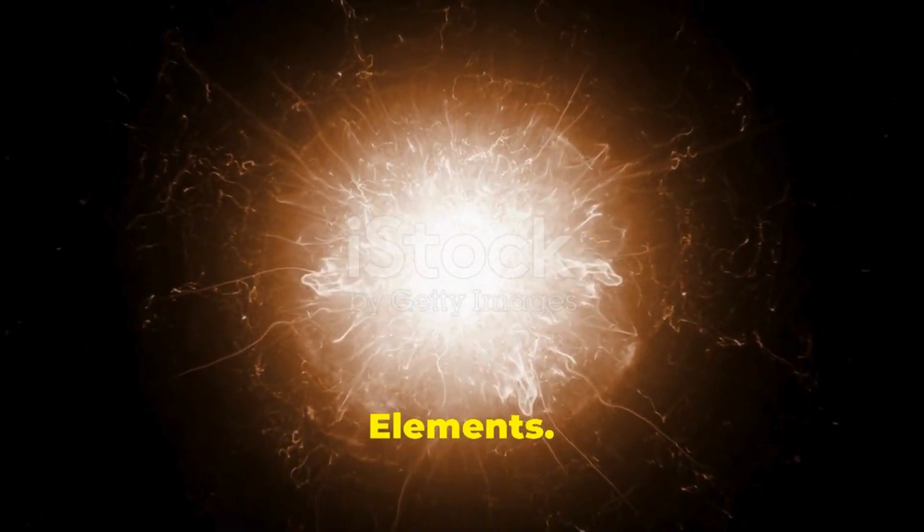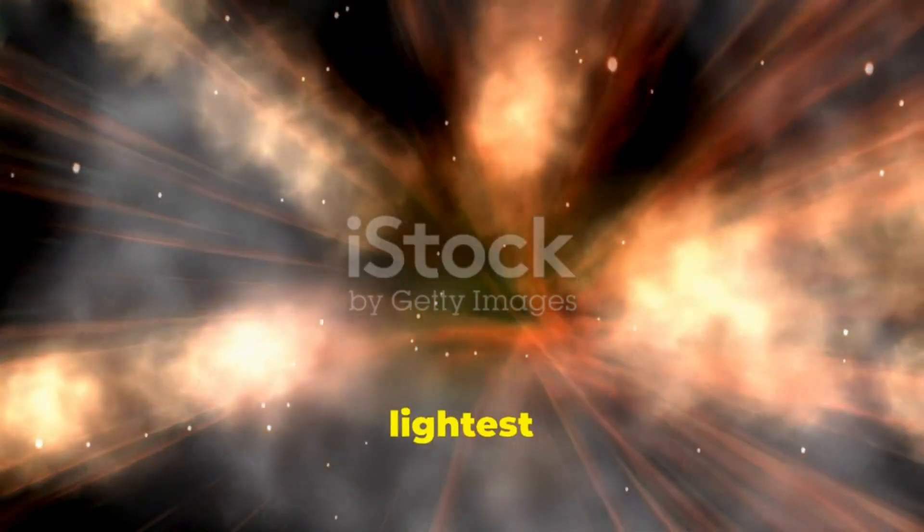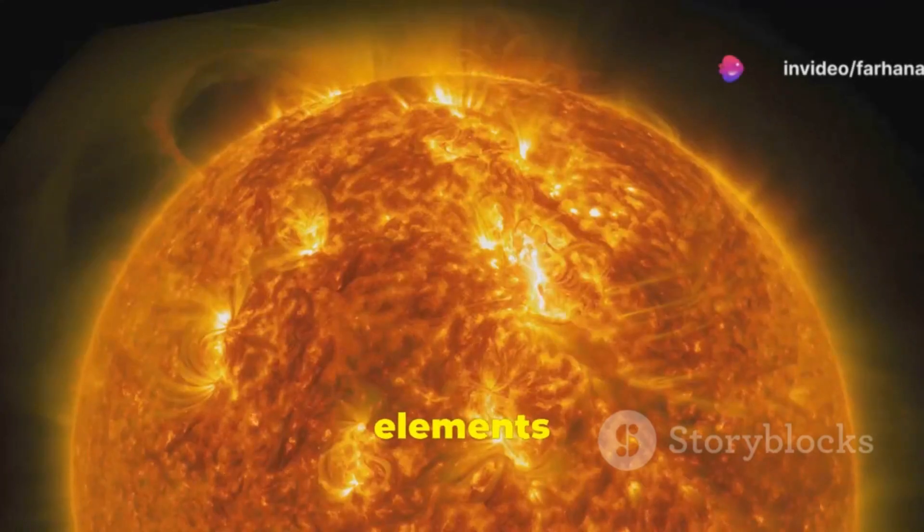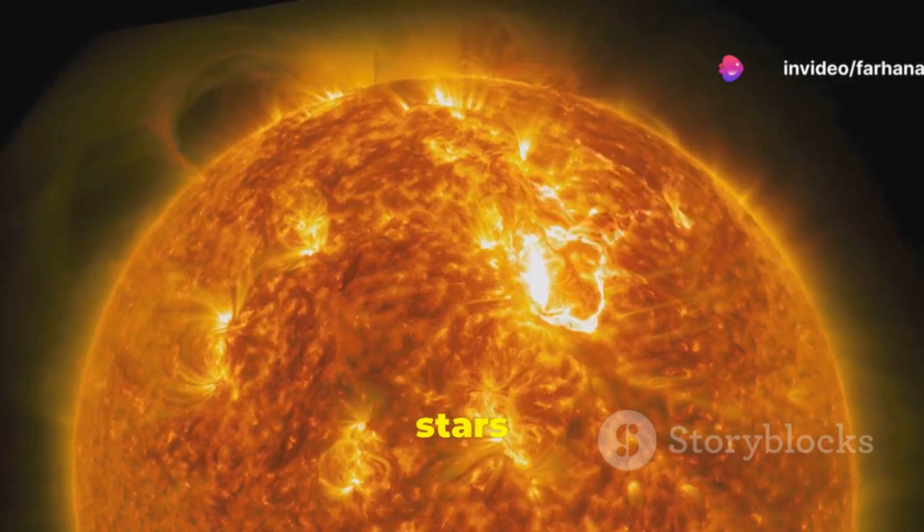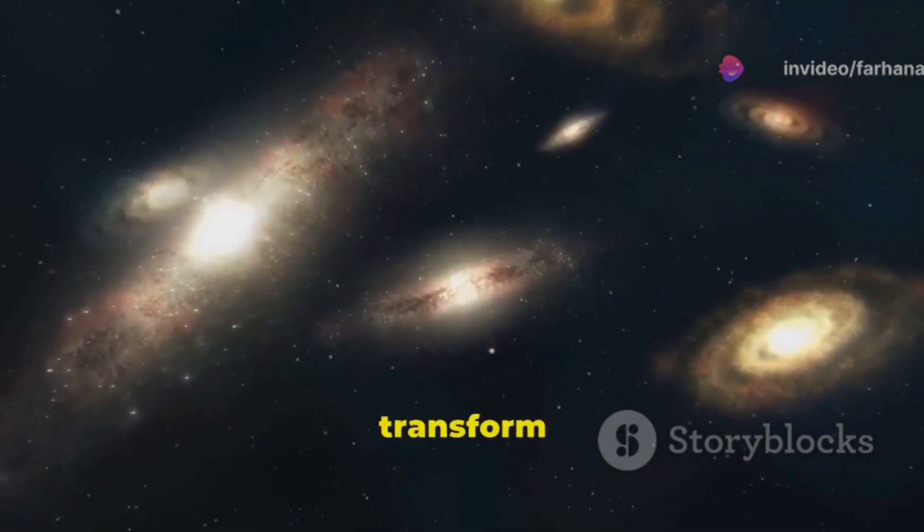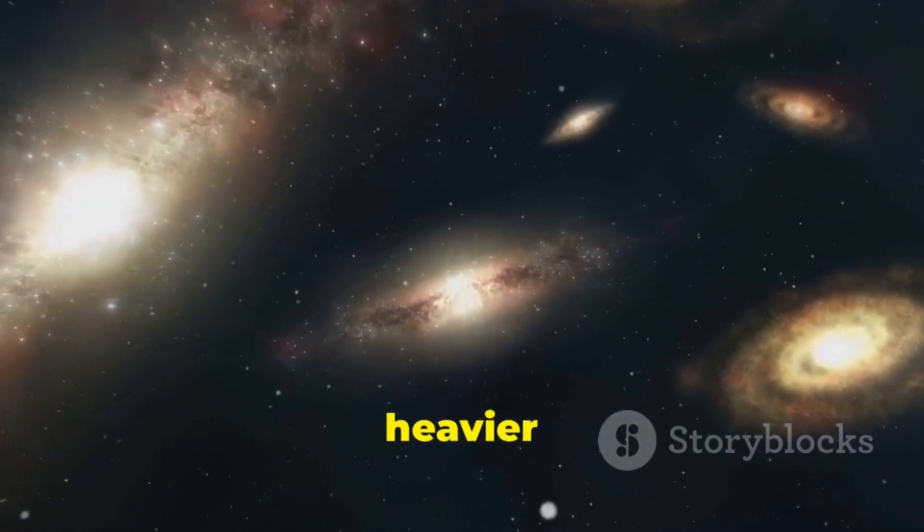The Big Bang produced the lightest elements, hydrogen and helium. Heavier elements are forged in the hearts of stars through nuclear fusion. Stars are cosmic furnaces that transform lighter elements into heavier ones.